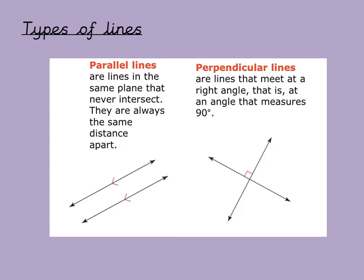Parallel lines are lines in the same plane that never intersect. They are always the same distance apart. I always like to think of the fact that they'll never meet - they're going in the same direction, but they could go on forever and they'll never meet.